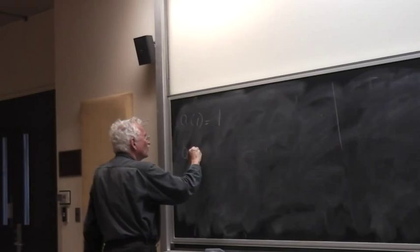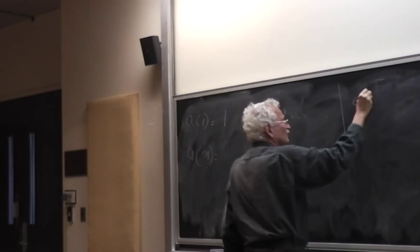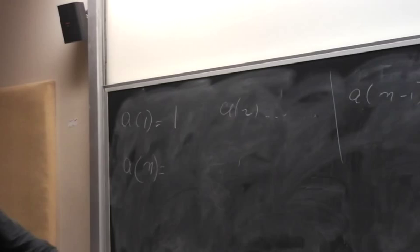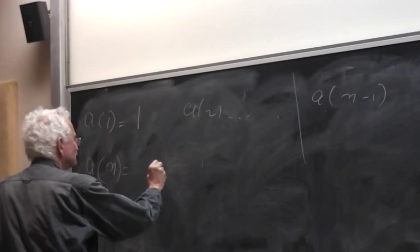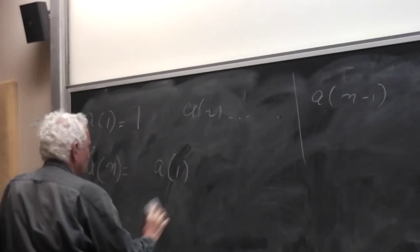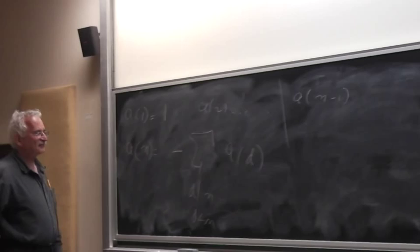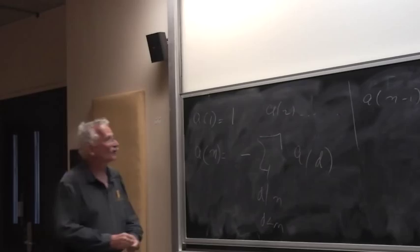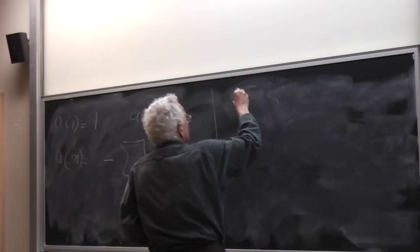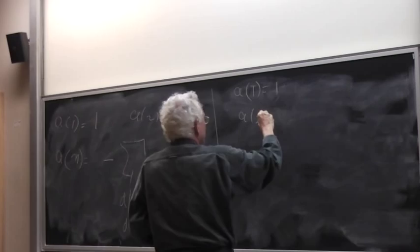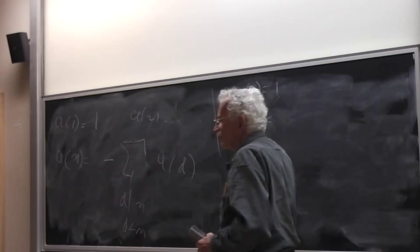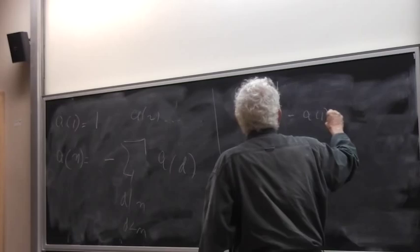Then once you know a(m-1), here's a way to figure out the next entry in the sequence a(n). That's enough. So that's an algorithm to crank out the sequence of numbers. Let's tabulate a few of them. a(1) is 1. a(2)—what are the divisors of 2 that are proper divisors, not 1, not 2? Just 1, right? So a(2) is minus 1.